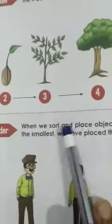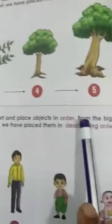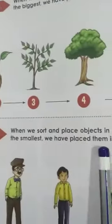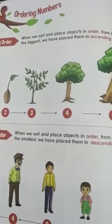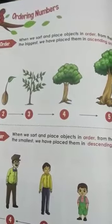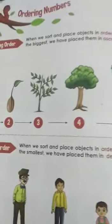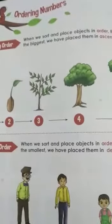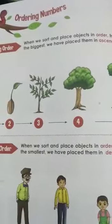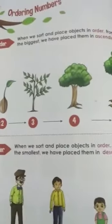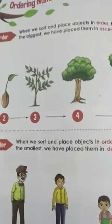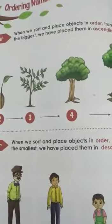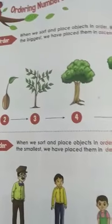Next one — descending order. When we sort and place objects in order from the biggest to the smallest, we have placed them in descending order. Descending order is just the opposite of ascending order. In ascending order, you first place the smallest and it becomes bigger and bigger until it reaches the biggest. In descending order, you first place the biggest, then it becomes smaller, smaller, smaller until it reaches the smallest. You will always need three or more things to arrange in ascending or descending order.